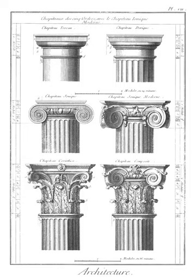Barrel vault: an architectural element formed by the extrusion of a single curve or pair of curves — in the case of a pointed barrel vault — along a given distance. Bartisan: an overhanging, wall-mounted turret projecting from the walls, usually at the corners, of medieval fortifications or churches.